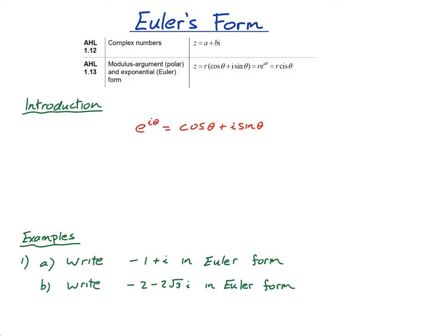In the last lesson we looked at modulus argument form or polar form, which was this way of writing a complex number: r(cos θ + i sin θ). And cis θ is just a fancy way of writing cos θ + i sin θ. You can also write a complex number in Euler's form as r·e^(iθ). Once you have r and θ, you've got Euler's form.